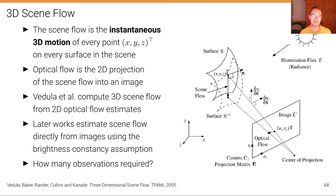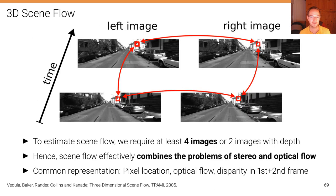How many observations are required for estimating scene flow? Recall that in the optical flow case, we needed two consecutive images as input. So how many images do we need in the case of scene flow?